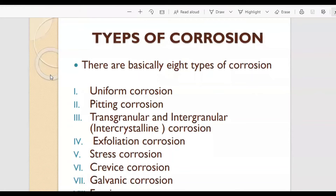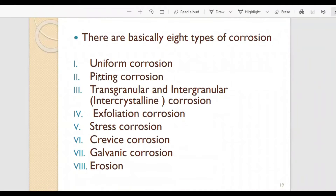There are basically eight types of corrosion: uniform corrosion, pitting corrosion, transgranular, intergranular, exfoliation, stress corrosion, crevice corrosion, galvanic corrosion, and erosion. So these are the eight types.